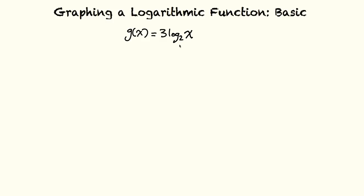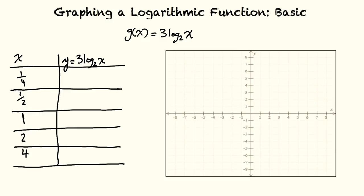So here's our table of values and our coordinate plane. The five smart values we've chosen here are x equals 1 fourth, 1 half, 1, 2, and 4.